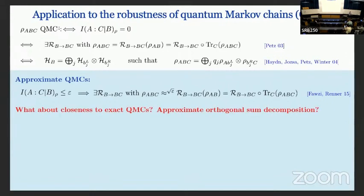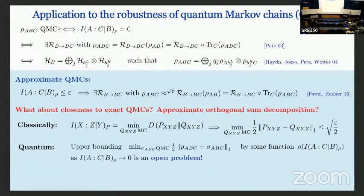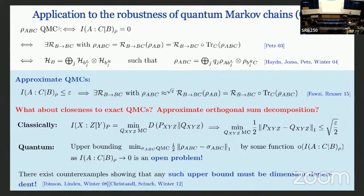The natural question is: whenever I have an approximate quantum Markov chain, does an exact one close to it exist — recovering an approximate orthogonal sum decomposition? In the classical case the answer is simple: you can write the conditional mutual information of a tripartite probability distribution as the minimum Kullback-Leibler divergence to the set of classical Markov chains, so you recover all structural properties approximately, and if you want total variation distance you just apply Pinsker. But quantumly, upper bounding this minimal distance to the set of quantum Markov chains by some function decaying as conditional mutual information goes to zero is an open problem. In fact, there are negative results showing any such upper bound must be dimension dependent, making the quantum case much more complicated than the classical.